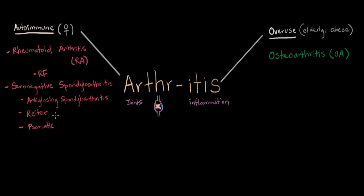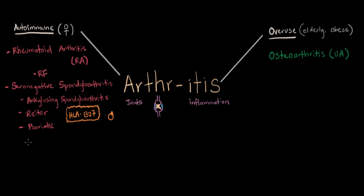With the seronegative spondyloarthritis diseases, one buzzword to remember is HLA-B27. For those of you taking tests, this counts as a buzzword — every time you see it, think of the seronegative spondyloarthritis diseases. HLA-B27 is a surface antigen on an immune cell, meaning it can attach to a white blood cell, and it's something these diseases have in common. Just cement HLA-B27 into your head and think of autoimmune seronegative spondyloarthritis.